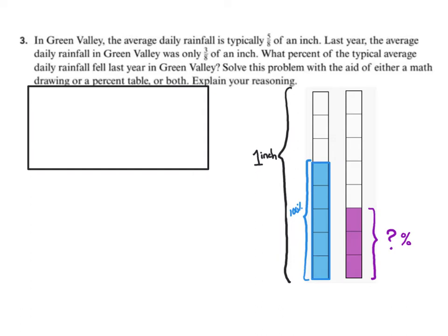In Green Valley, the average daily rainfall is 5 eighths of an inch. So I have shown that over here. This whole thing is one inch, then shaded in blue is 5 eighths of an inch. Last year, the average daily rainfall in Green Valley was only 3 eighths of an inch.